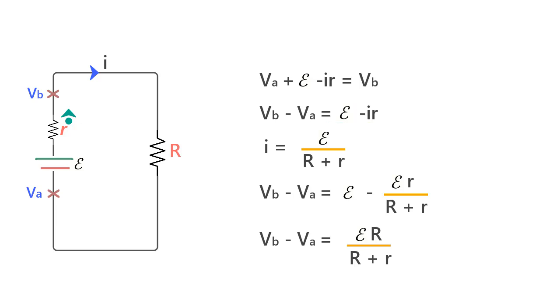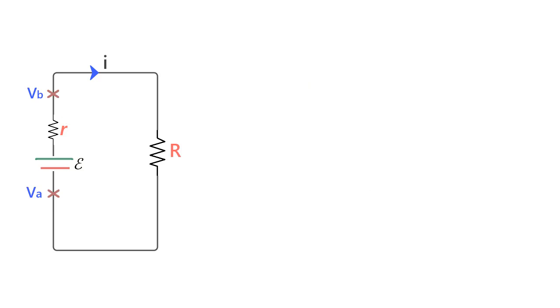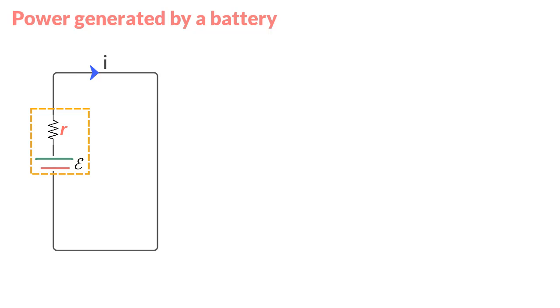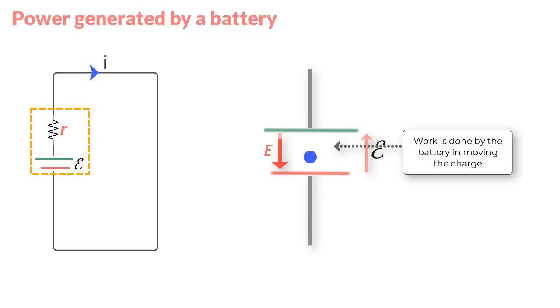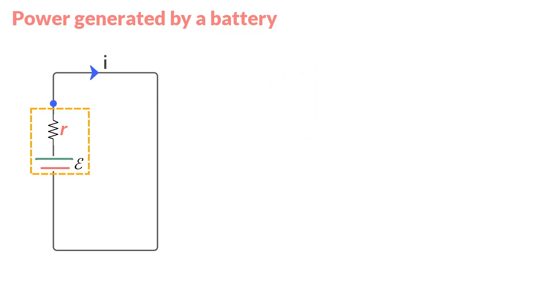Okay, let us shift gears and get an understanding of power that a battery of EMF can generate. So where a battery establishes current by doing work on a charge carrier, what is happening is that the chemical energy of the battery is getting transferred to the charge that enables it to move in the circuit and create current. And since any EMF device like a battery would have an internal resistance, some energy would get wasted there.